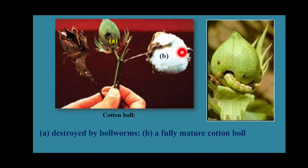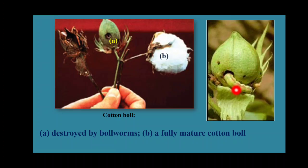In the first figure you can see cotton that is destroyed by the bollworm — no proper cotton ball is present. In the second case, it shows a properly grown, fully mature cotton ball with no damage. This happens because in BT cotton, insects cannot harm the plant since the plant contains the protective protein.